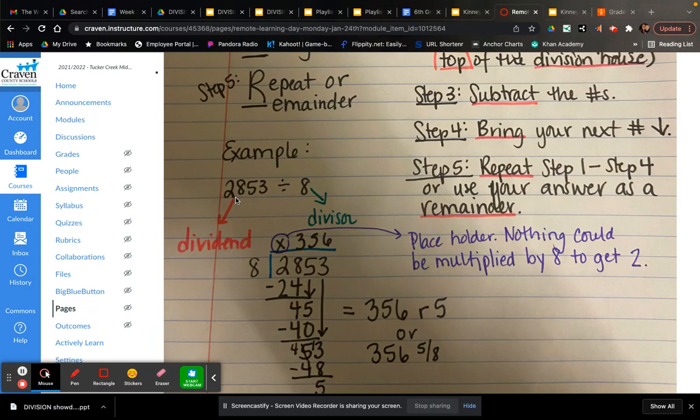So here's an example, 2,853, which is your dividend, divided by eight, which is your divisor. So when you set it up, you have your division house. The 2,853 goes inside. The eight goes on the outside.